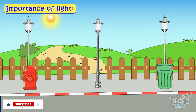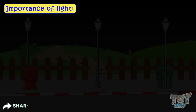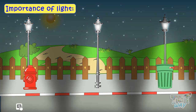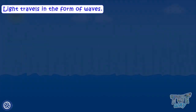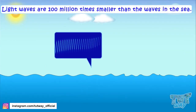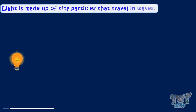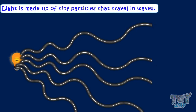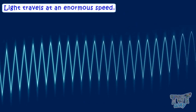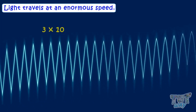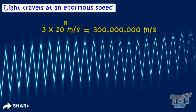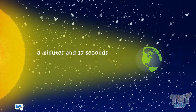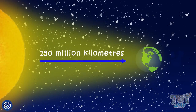We need light to see different things and to light up our houses and workplaces. Our life depends a lot on light as we can't see anything in the dark. In the daytime we use natural light, and in the evening or night we use artificial lights. Energy travels in the form of waves, similar to waves in the sea but 100 million times smaller. Light is made up of tiny particles that travel in waves. Light travels at an enormous speed — 3 × 10⁸ meters per second, which is approximately 300 million meters per second. Light from the sun takes about 8 minutes and 17 seconds to reach Earth, where the distance between the sun and the earth is 150 million kilometers.